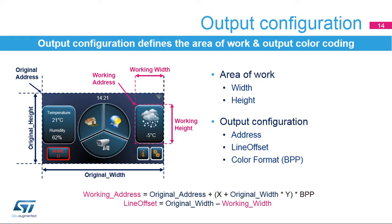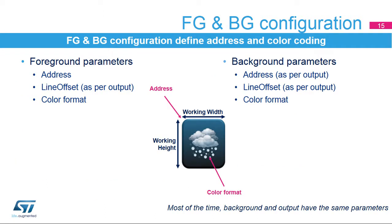The resulting pixel can be coded independently from the source thanks to the output pixel format converter. The output configuration defines the working area for the Chrom-ART operation. The address and the line offset parameters are used to select which sub-area of the output is concerned. The background and foreground layers have their own configuration for address, line offset, and color format, defining which area is targeted by the Chrom-ART operations.